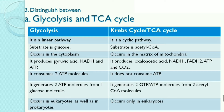Question 3: Distinguish between. First, glycolysis and TCA cycle. Glycolysis is a linear pathway, whereas the Krebs cycle (TCA cycle) is a cyclic pathway. The substrate of glycolysis is glucose and of the TCA cycle is acetyl CoA. Glycolysis occurs in the cytoplasm and the Krebs cycle occurs in the matrix of mitochondria.